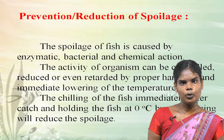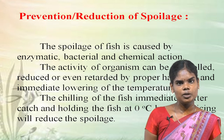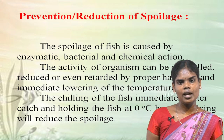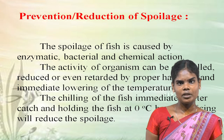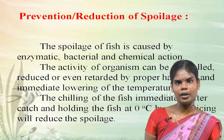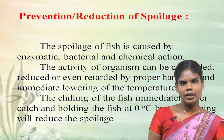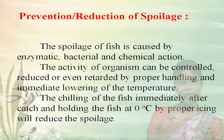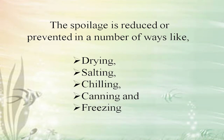Next is how to prevent or reduce fish spoilage. Fish spoilage is a complicated process brought about by the action of enzymes, bacteria and chemicals present in the fish. The activity of organisms can be controlled, retarded or reduced by proper handling and immediately lowering the temperature. Chilling the fish immediately after catch will reduce the spoilage rate. There are many methods to avoid fish spoilage.